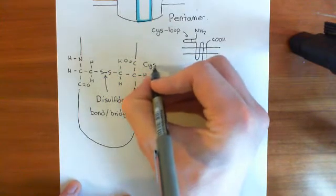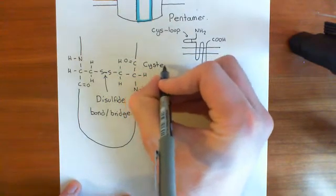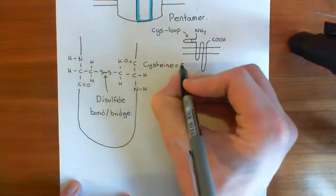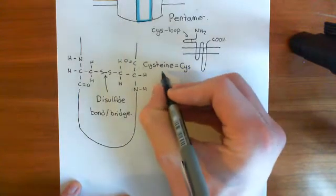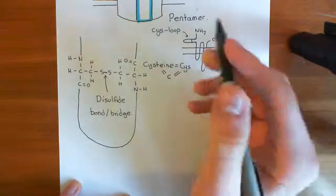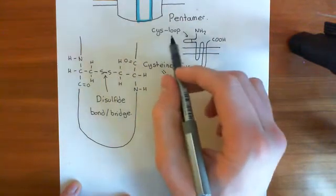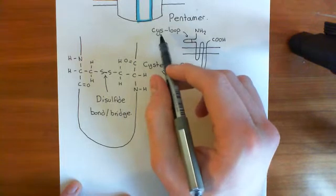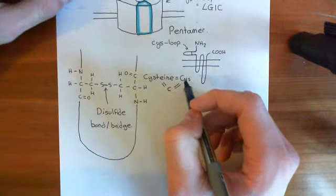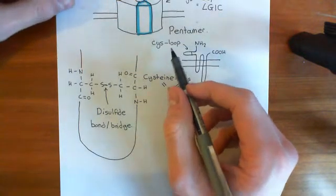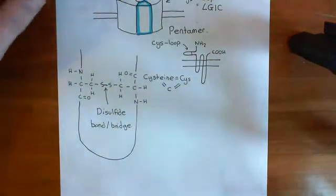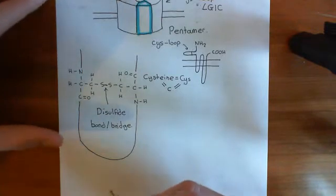The amino acids involved in the formation of this disulfide bond are cysteine amino acids. The three-letter amino acid code for cysteine is CYS, and the single-letter amino acid code for cysteine is just C. This is why we call this a cis-loop: CYS is the three-letter code for the amino acid cysteine, which is so important in maintaining the structure of this loop. That's why they are called cis-loop ligand-gated ion channels.